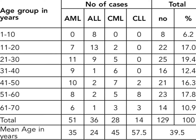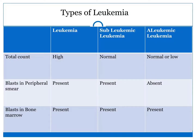This is a result of a study conducted on the age distribution of leukemia. It shows the maximum number of cases of leukemia subtype ALL are seen in the first and second decade, while in the third, fourth, and fifth decade more cases of AML are seen, while chronic leukemias are more seen after the fifth decade. The mean ages are: 35 for AML, 24 for ALL, 45 for CML, and 57.5 for CLL.